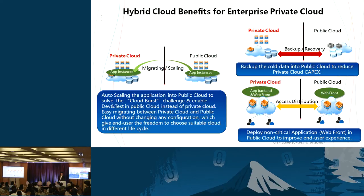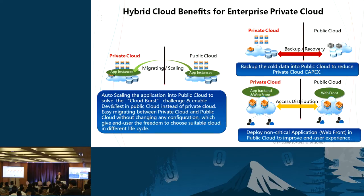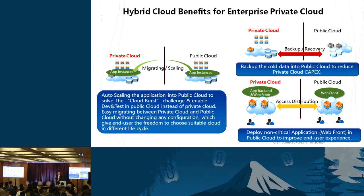Another possibility is deploying different sets of applications in different cloud points of presence. For example, mission-critical application backend databases are located within the private cloud, while non-mission-critical or more temporary and bursty traffic workloads are placed within the public cloud — all with unified IP addressing, security planning and governance across both private and public cloud environments.